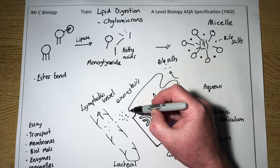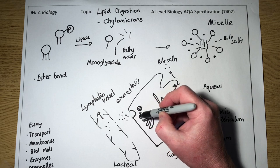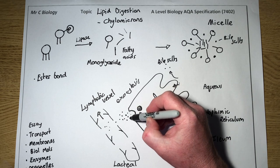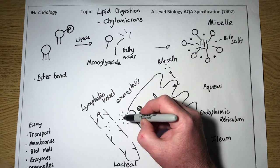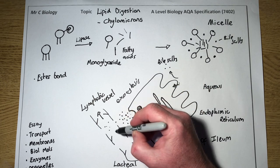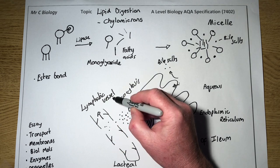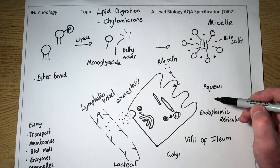The vesicle would move to the surface of the cell, and then the chylomicrons would be released by exocytosis, and the chylomicrons enter the lacteal, which is part of the lymphatic vessel for transportation away.